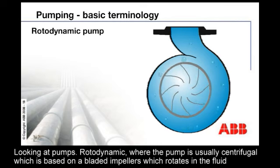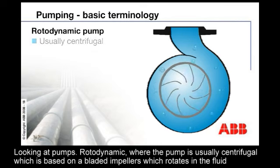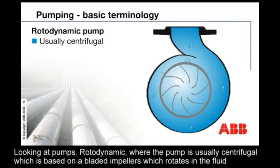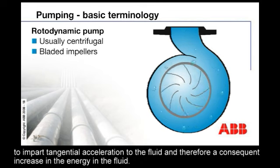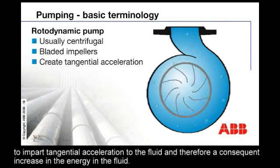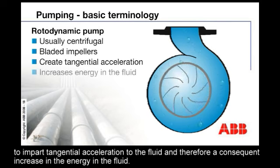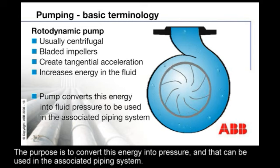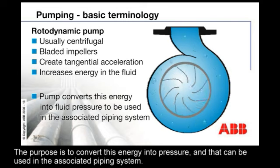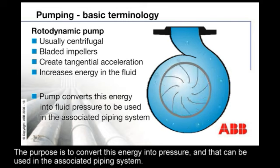Looking at pumps, the rotor dynamic — where the pump is usually centrifugal, based on a bladed impeller which rotates in the fluid to impart a tangential acceleration to the fluid, and therefore a consequent increase in the energy in the fluid. The purpose is to convert this energy into pressure, and that can be used in the associated piping system.